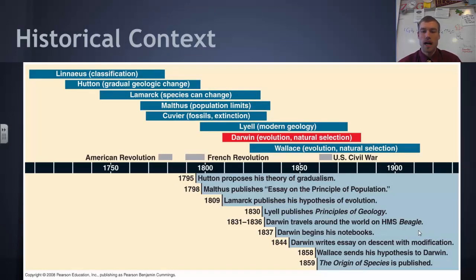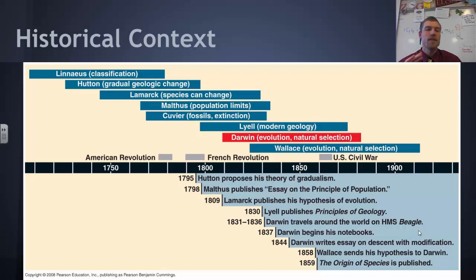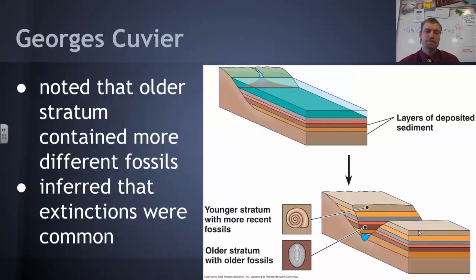Just to give a little historical context for Darwin and his ideas — there were a lot of scientists that came before him that Darwin built upon. A lot of these developments occurred from about the early 1800s until about 1850 to 1860 or so, a pretty short time span when many of these things were being investigated. The first person we're going to talk about is Georges Cuvier, a paleontologist who was looking at fossils.